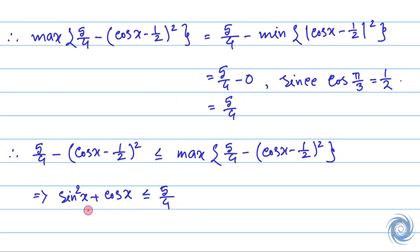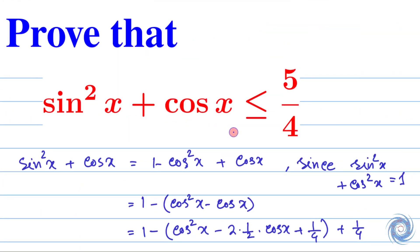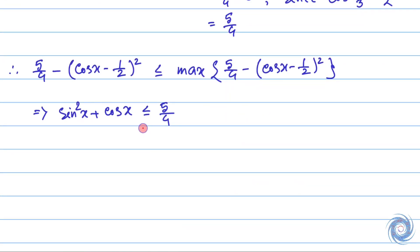Finally, we have sin²x + cos x ≤ 5/4. Here we were supposed to prove this inequality, and we have shown that sin²x + cos x ≤ 5/4. So we are done. Thank you.